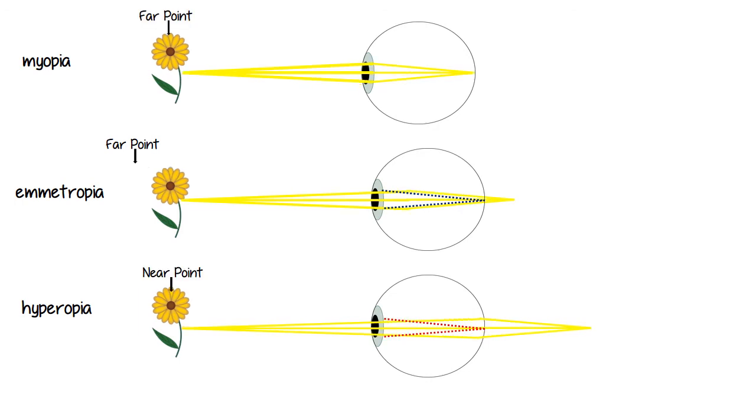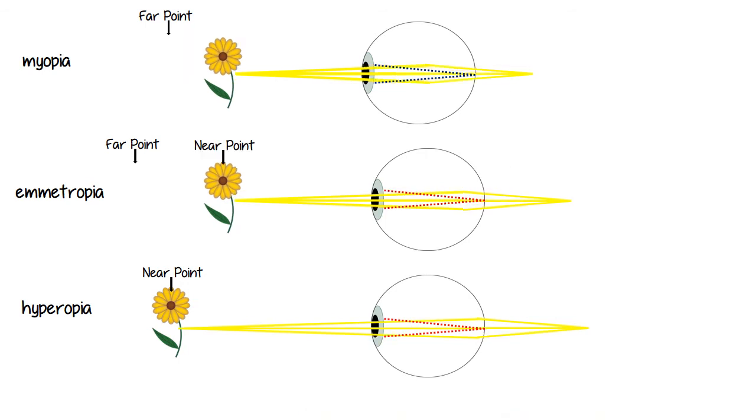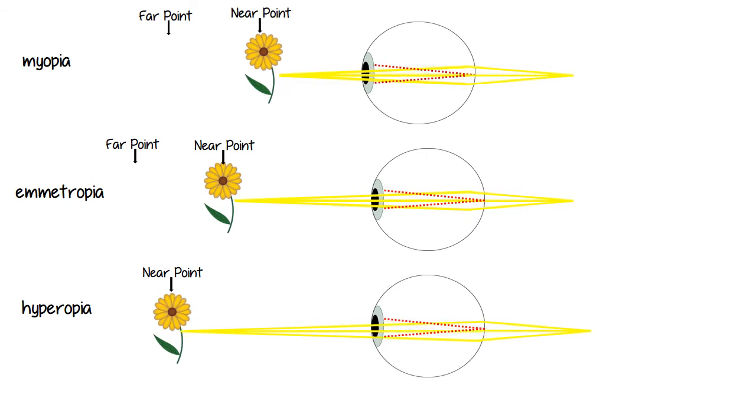As the object moves a little bit closer, the hyperope has reached their maximum accommodation. They're at their near point. If the object moves any closer, they won't be able to see it clearly. The emetrope is still accommodating. The myope is not accommodating yet. However, they have reached their far point. They can now see this object clearly. And once we've moved a little bit closer than the far point for the myope, they begin accommodating. The emetrope is still accommodating. The object moves a little closer, and the emetrope has reached their near point. The myope is still accommodating. And the object moves closer, and the myope finally reaches their near point.